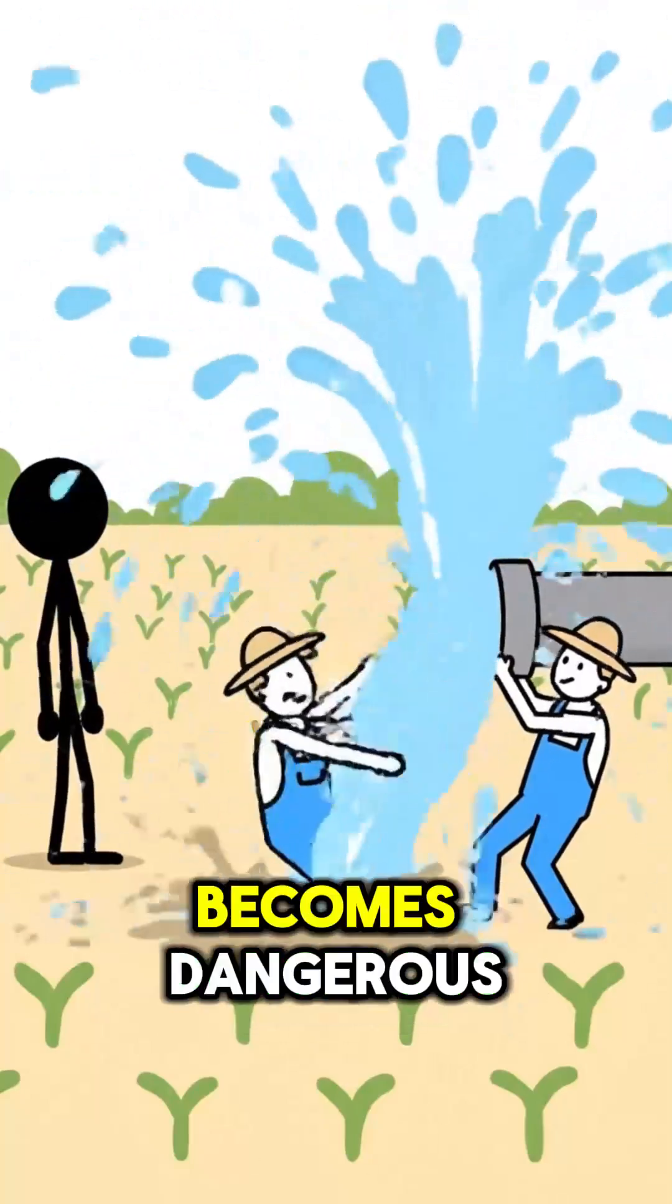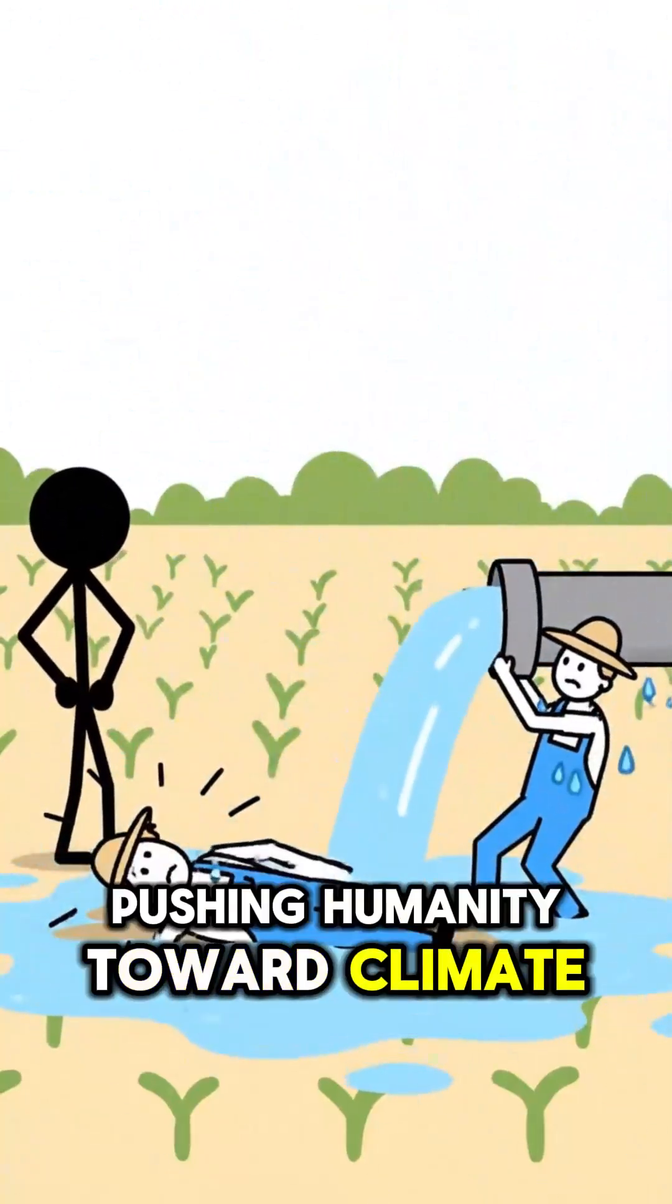Farmers struggle as irrigation becomes dangerous, pushing humanity toward climate-controlled farming.